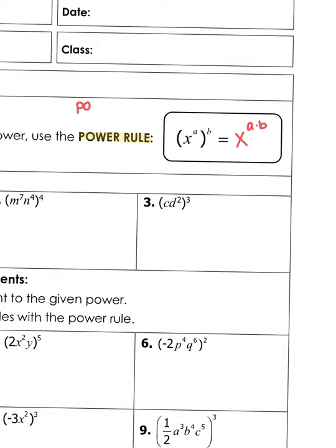To keep this rule straight: when you have a power raised to another power, we multiply. A power raised to another power means to multiply. Here is one power being raised to another power. Let's do some examples.